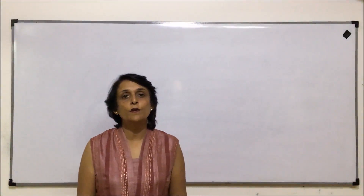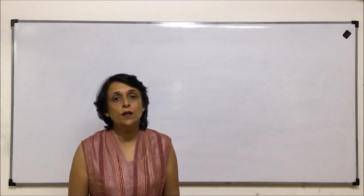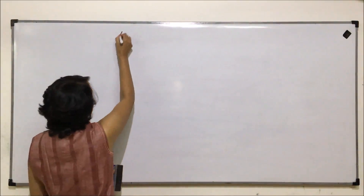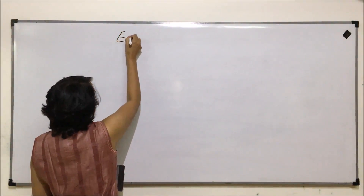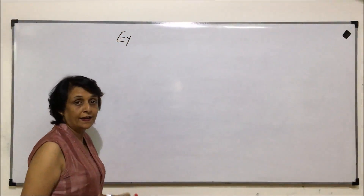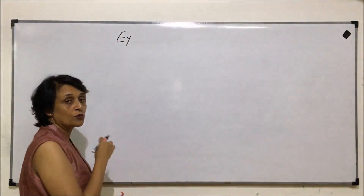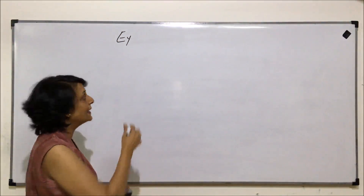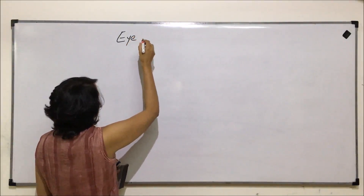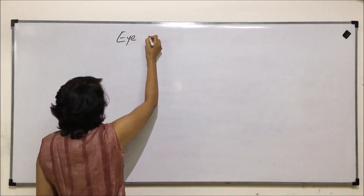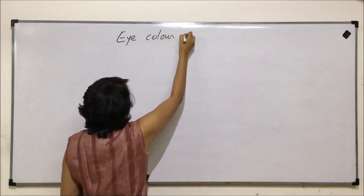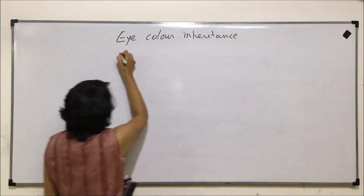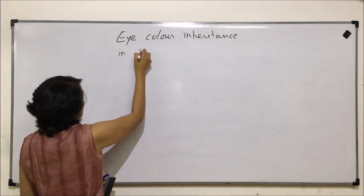In this video we'll talk about eye color inheritance in Drosophila. The color of the eye is present on the sex chromosome, that is the X chromosome, and how that gets inherited is what we are talking about — eye color inheritance in Drosophila.